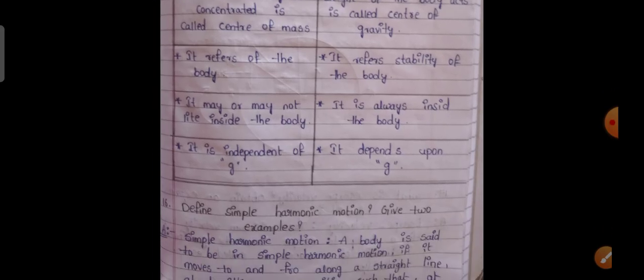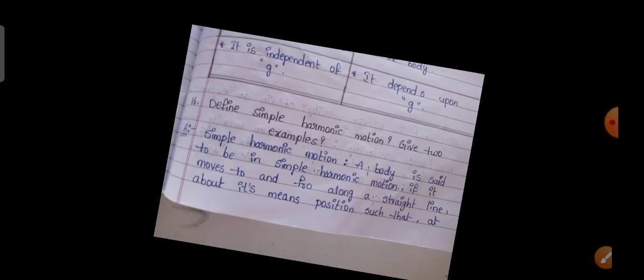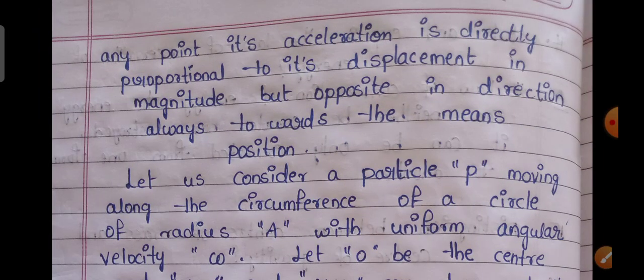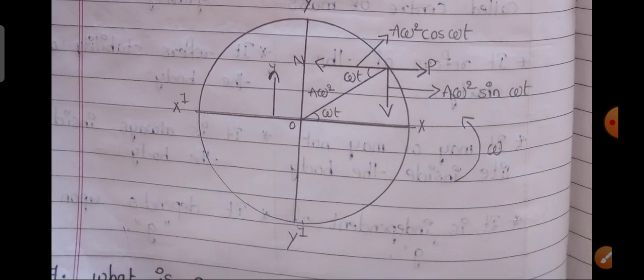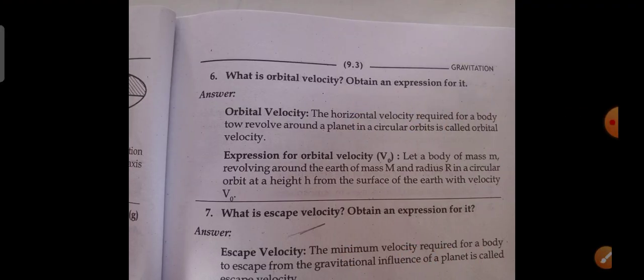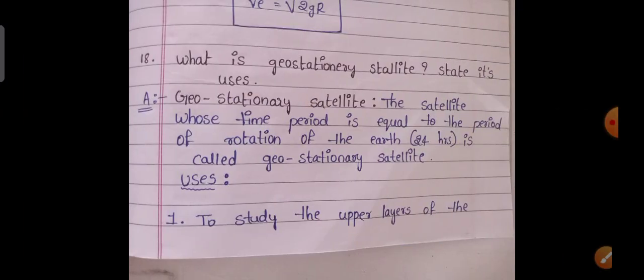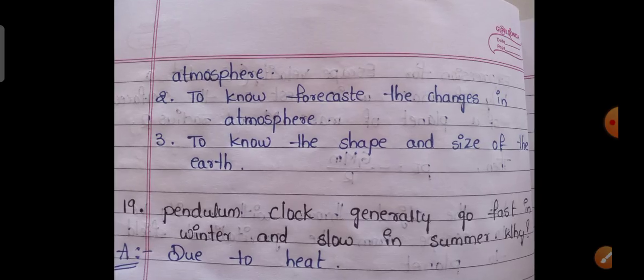The second one, orbital motion and state of gravity. Define simple harmonic motion and give two examples. The sixth one is important: What is escape velocity? Obtain an expression for it. Sixth one is important: What is a geostationary satellite or state the uses of geostationary satellites? Important question, continuation answer.